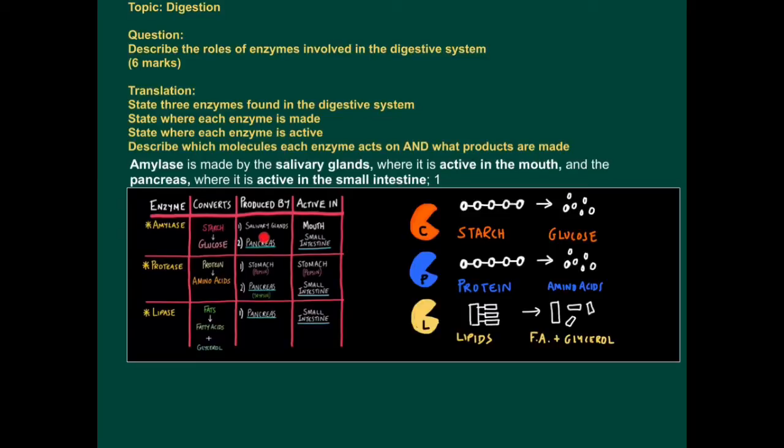So amylase is produced in two areas, the salivary glands and the pancreas, but it becomes active in the mouth, where the salivary glands are, and the small intestine, which the pancreas feeds into.